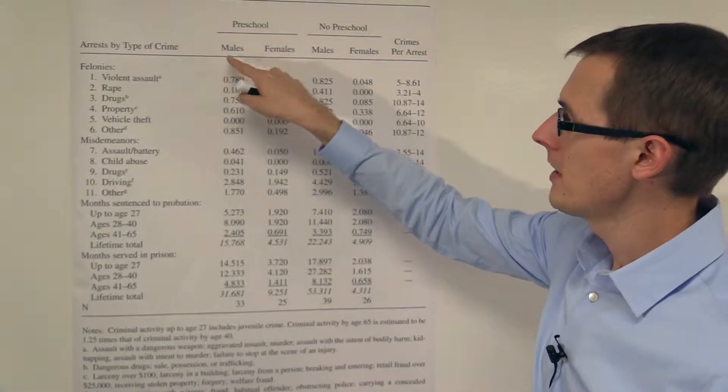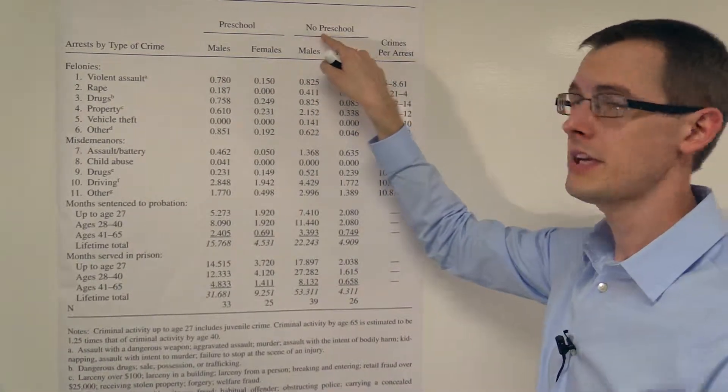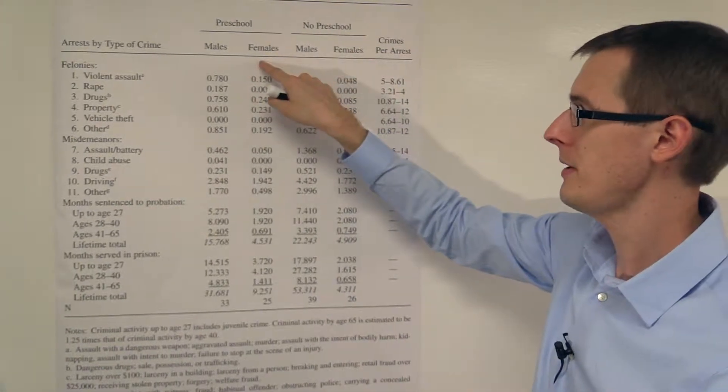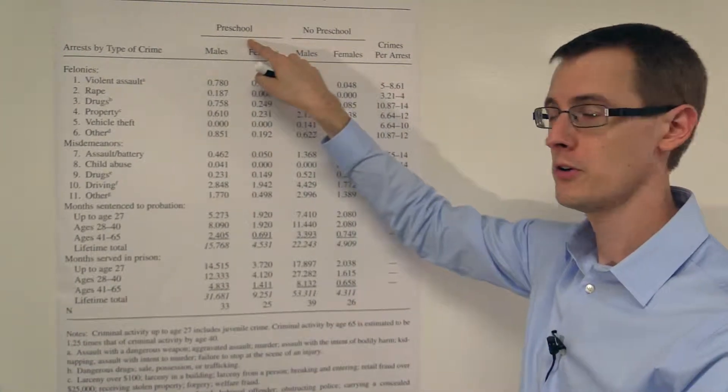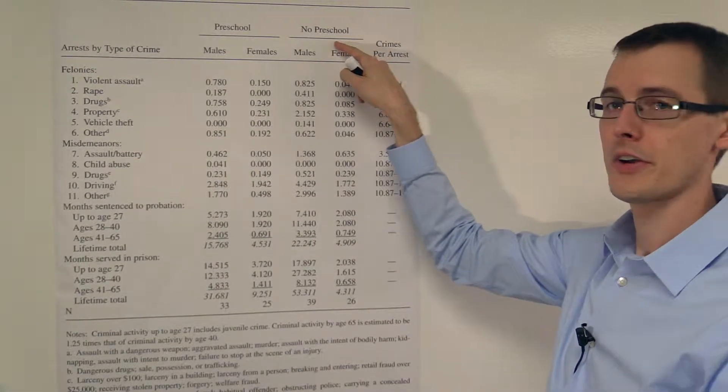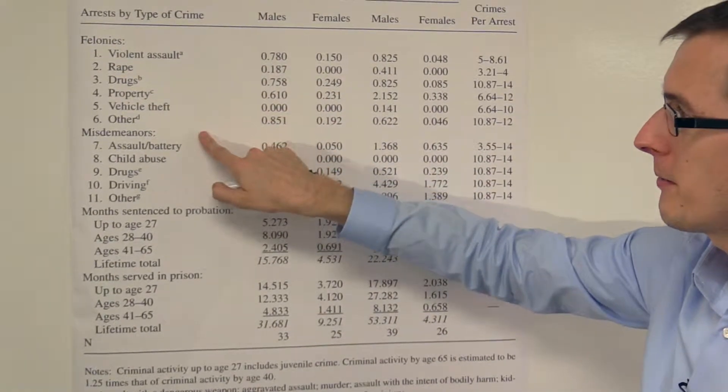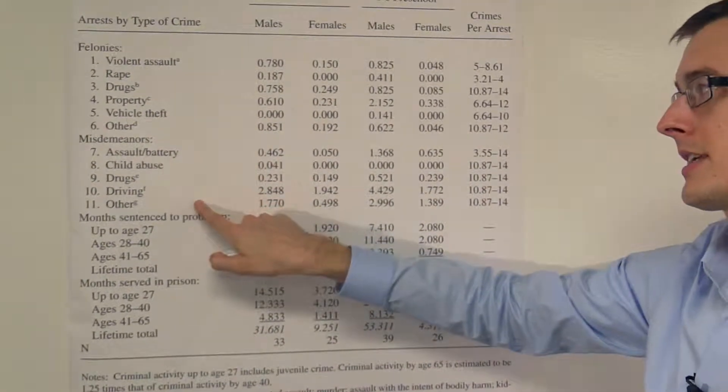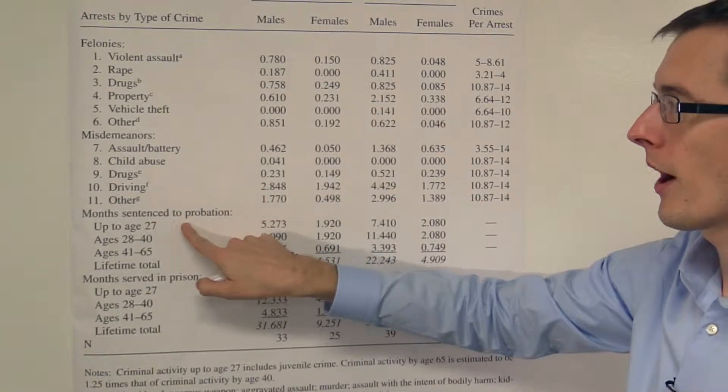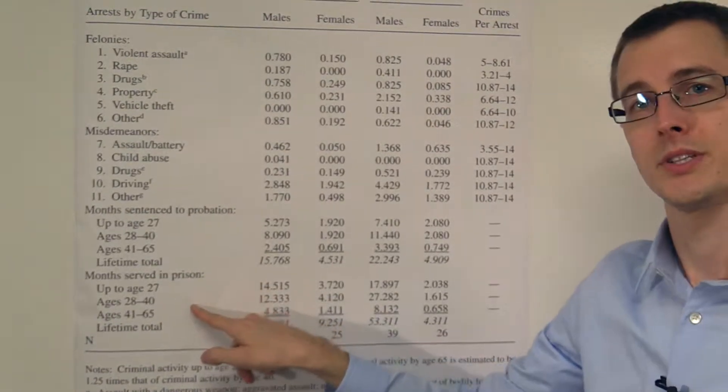So here we've got males who went to preschool in the treatment group versus males who didn't go to preschool in the control group. And then we've got females who went to preschool in the treatment group versus females who didn't go to preschool in the control group. And over here on our rows, we've got lots of different measures of criminal activity, different crimes you could commit, or how many months you're sentenced to probation at certain age ranges, and how many months you've served in prison.